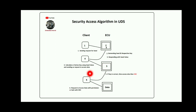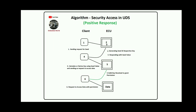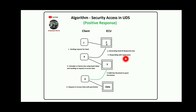Once the ECU validates whether the respective key is correct or not — if it is correct, it will give a positive response; if not, it will give a negative response. In the fourth step, the tester is giving the valid key data to the ECU. The ECU processes and evaluates the key value, and once it is a perfect match, it gives the positive response to grant data access.